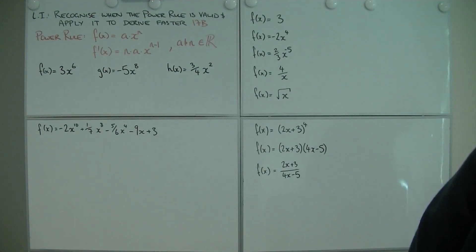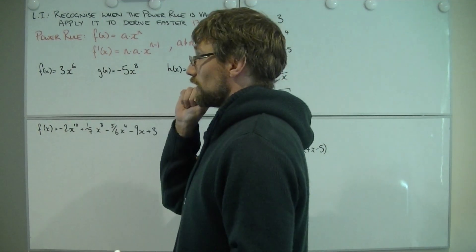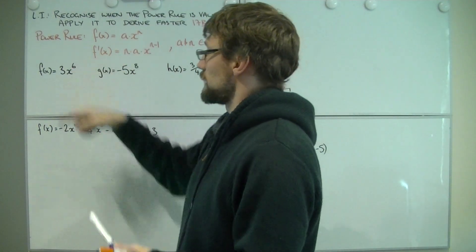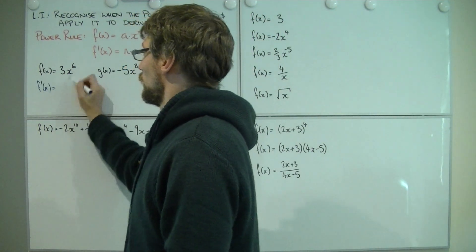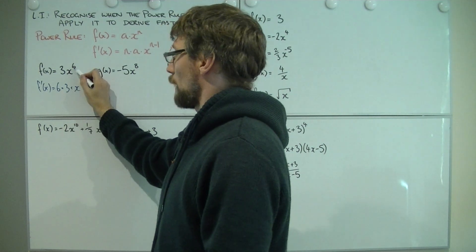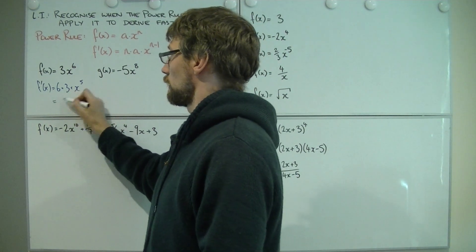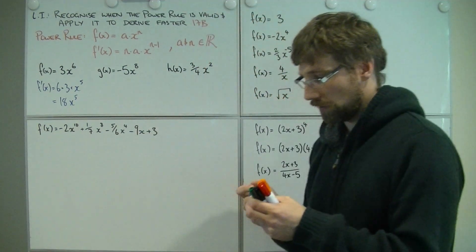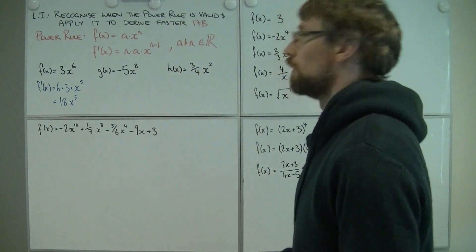We've got a whole bunch of examples. I've got a function 3x to the 6. So I'm applying the power rule. Bring the power down the front. So my derivative - bring the power down the front, 6, multiply 3, multiply x, the power goes down by 1. Well, 6 by 3, I can simplify. So I get 18x to the 5. Done. That easy. No h's, no making things go to 0, no factorizing. Super fast and easy.